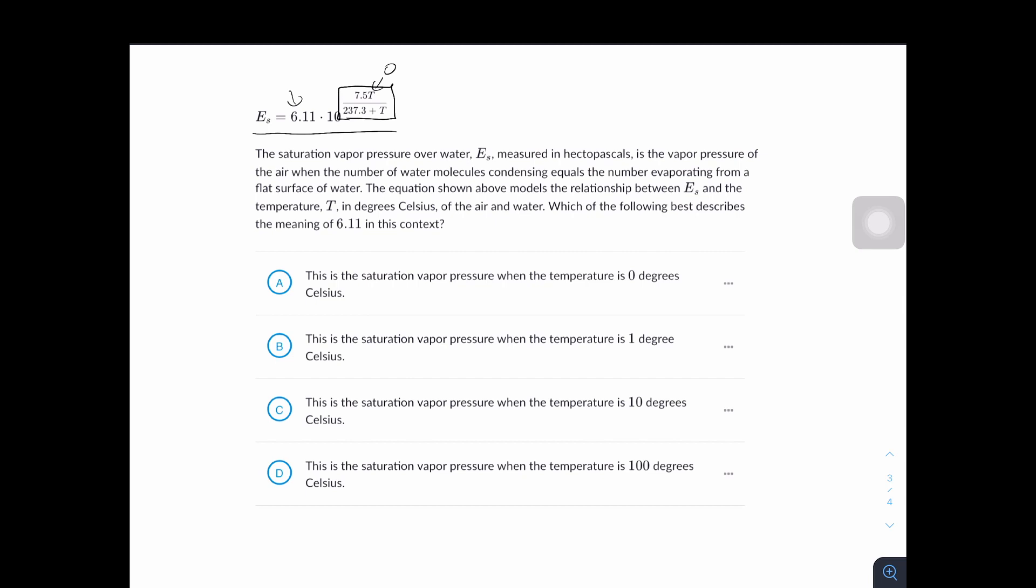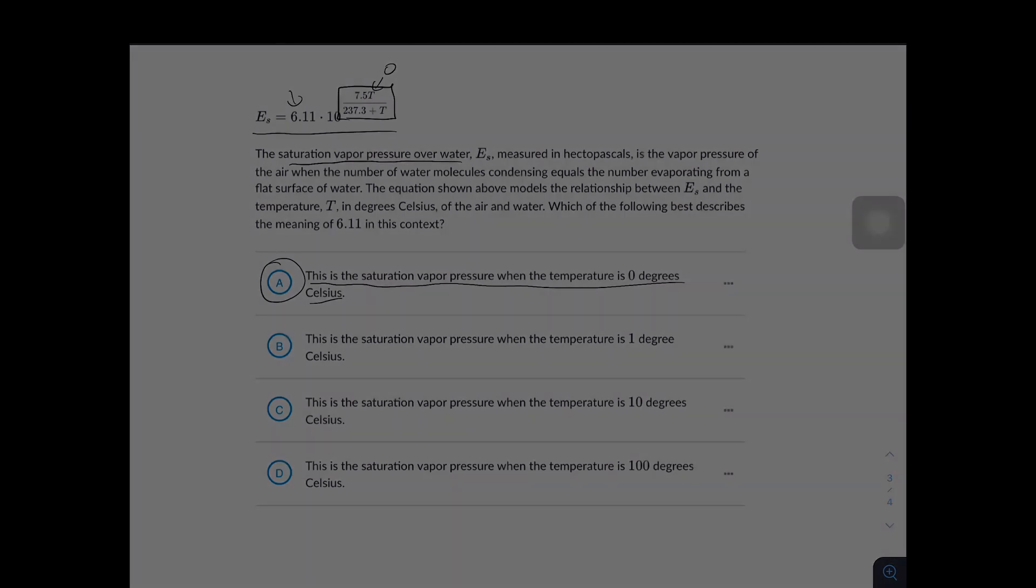And it says that Es is the saturation vapor pressure over water, which matches up with this answer choice right here. This is the saturation vapor pressure when the temperature is zero degrees Celsius. So answer choice A is correct.